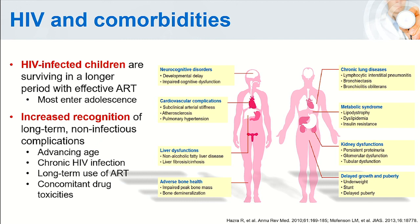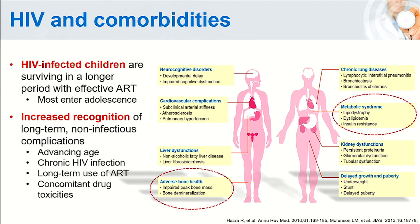The major contributing causes of these complications include advancing age into adolescence, chronic HIV infection itself, long-term use of some specific types of ART, as well as the toxicity of concomitant drugs. Today I will focus on two complications among HIV-infected youth: adverse bone health and metabolic syndrome.